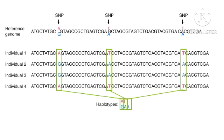For example, in humans, each individual inherits two copies of every chromosome, one from each parent. The specific combinations of alleles or variants inherited at several loci can define a person's haplotype.